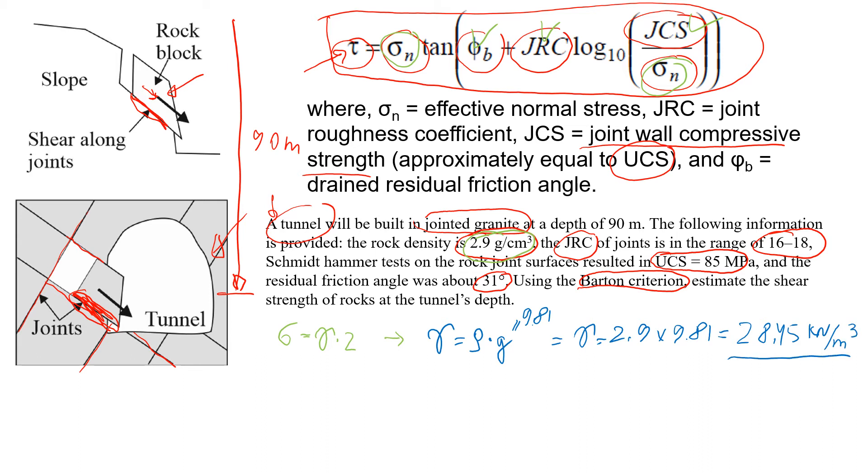Next step is to estimate normal stress at depth of 90 meters. So in this case it will be unit weight 28.45 times 90 meters, so that will give us a value converted to MPa - 2.56 megapascals. So that's the normal stress that we would expect at the depth of 90 meters.